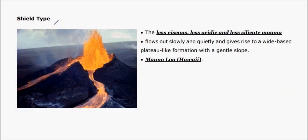The next kind is shield type volcano, in which the lava doesn't explode, it just flows out very smoothly. This lava is very less viscous, less acidic, and less silicate.